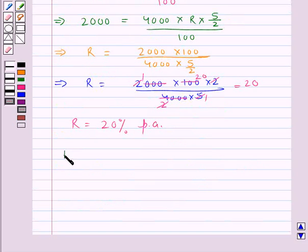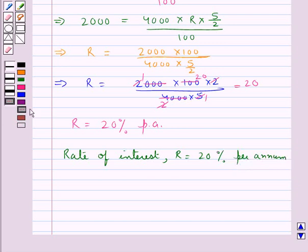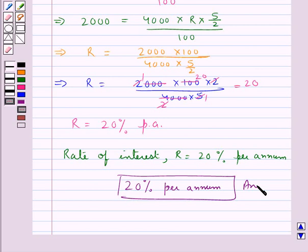So the rate of interest R is 20% per annum. This is the final answer. This completes the session. Hope you have understood the solution for this question. Thank you.